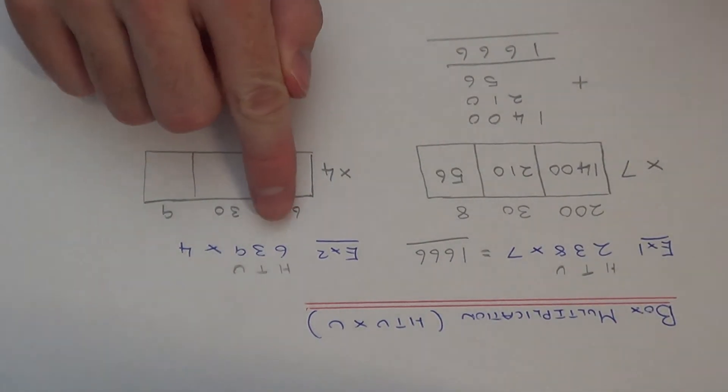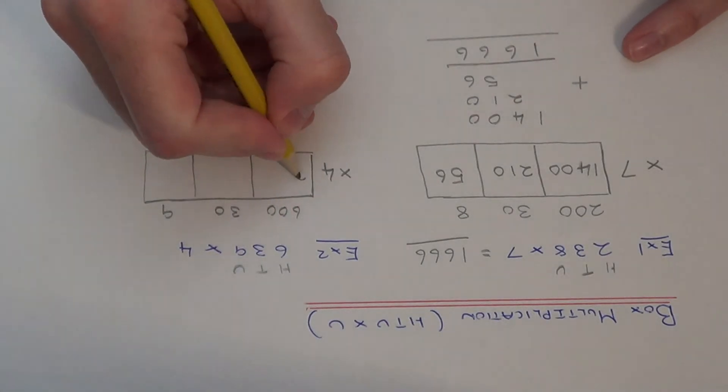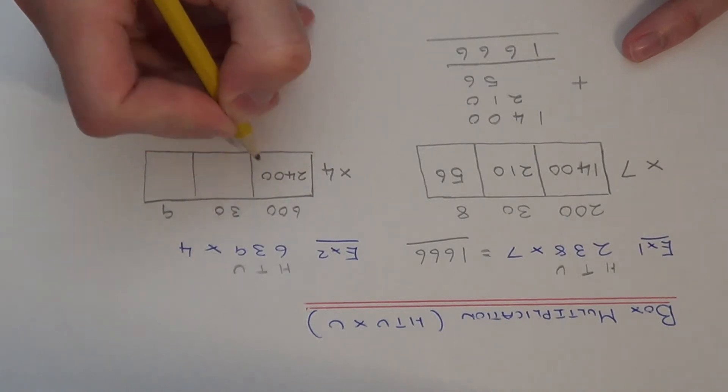So again we can cover up the zeros to make things easier, so what's 6 times 4, that's 24, and then add the two zeros back on.